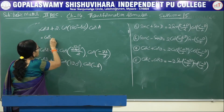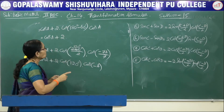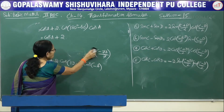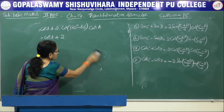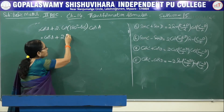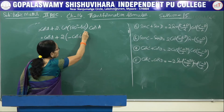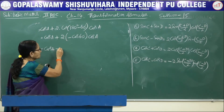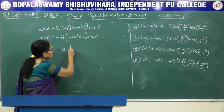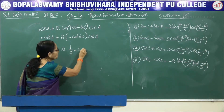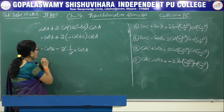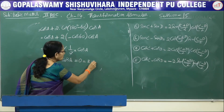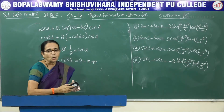We now have cos A + 2·cos(120°)·cos A. Since 120° is in the second quadrant where cosine is negative, cos(120°) = cos(180° - 60°) = -cos(60°) = -1/2. So the expression becomes cos A + 2·(-1/2)·cos A = cos A - cos A = 0, which equals the right hand side.